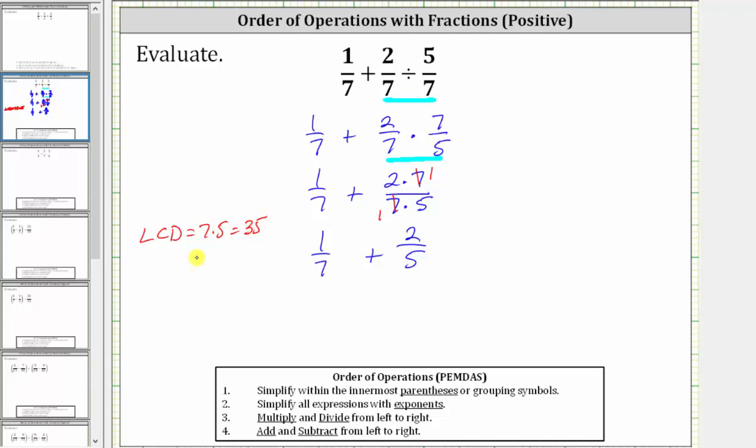So now we write each fraction as an equivalent fraction with the denominator of 35. And therefore we multiply the numerator and denominator of one seventh by five. And we multiply the numerator and denominator of two fifths by seven. Notice now we do have a common denominator of 35. One seventh is equivalent to five thirty fifths plus two fifths is equivalent to 14 thirty fifths.